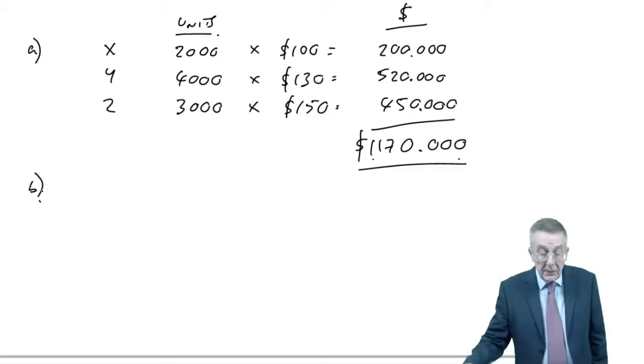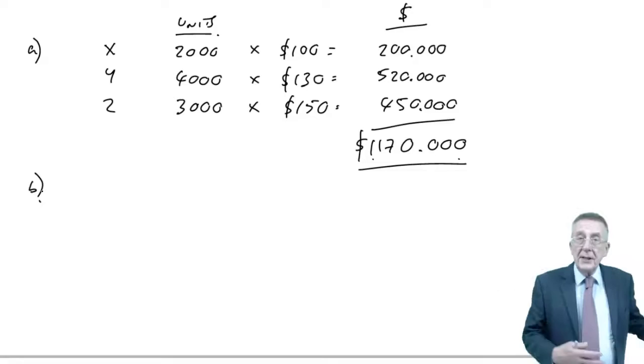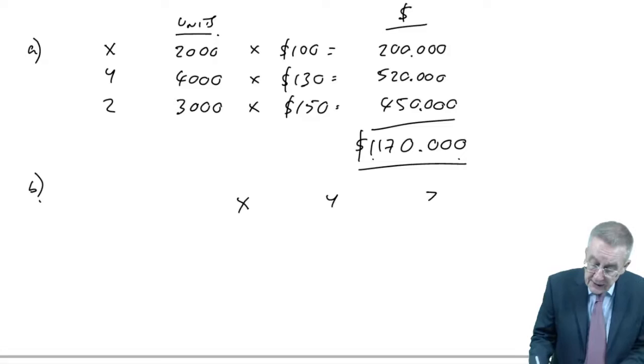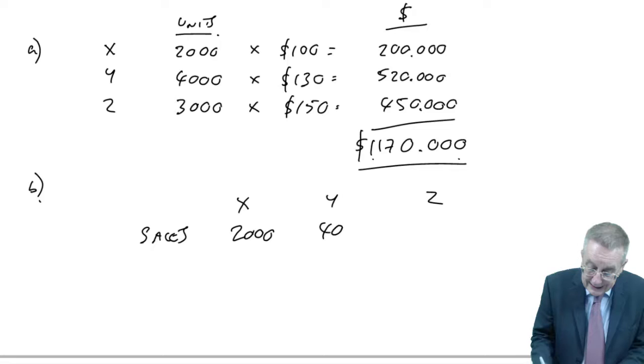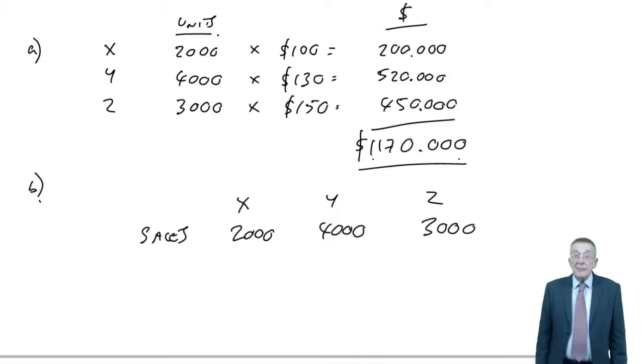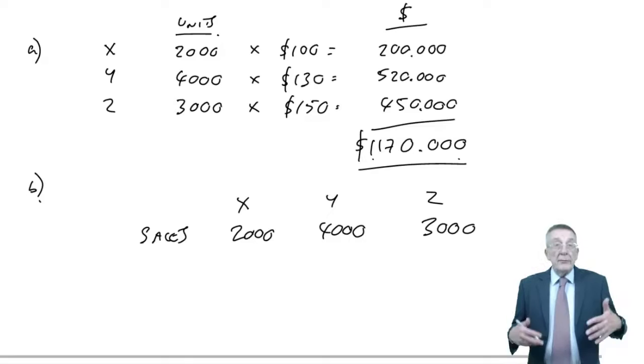But what about B? A production budget in units. So, if sales is our principal factor, it's the level of sales that determines how many we're going to produce. And we're producing three products. We know what we're budgeting on selling. So, why on earth should we produce any different?